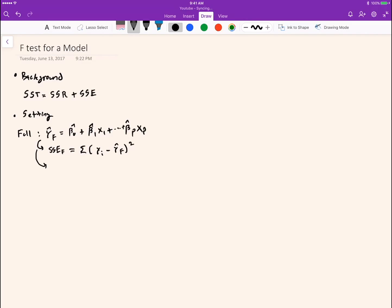And this model also has a number of parameters which is in this case p from here. Actually it would be p plus 1 because of the intercept beta 0.